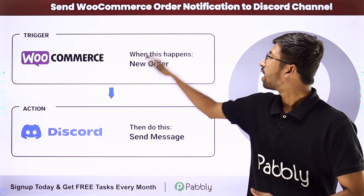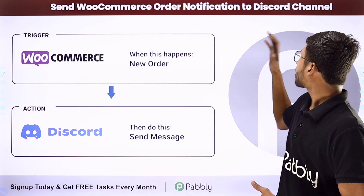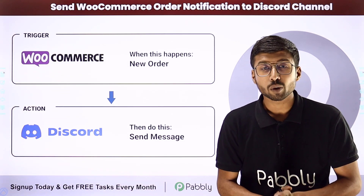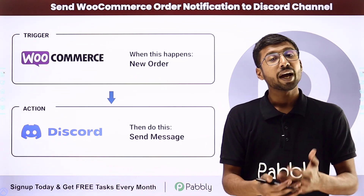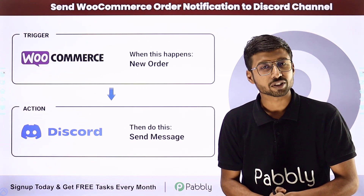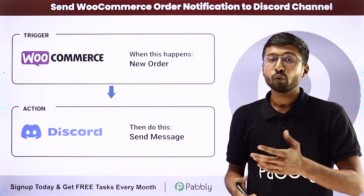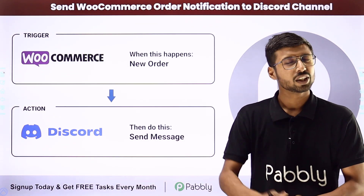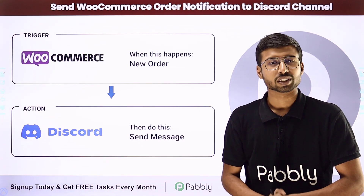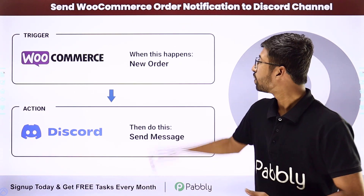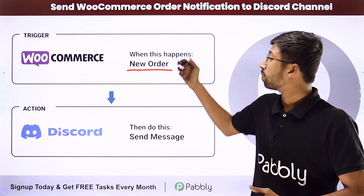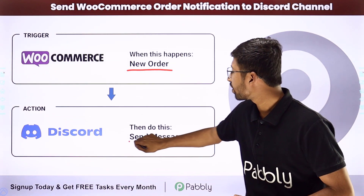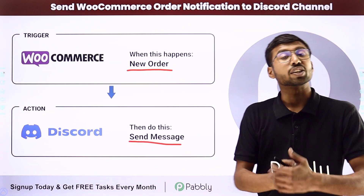In this video we are going to learn how to send WooCommerce order notifications to a Discord channel. If you have created an e-commerce store using WooCommerce and you want to notify your team members on Discord about new orders and their details, you can completely automate this process. The trigger of this automation will be getting a new order on your WooCommerce store, and the action will be sending those order details as a channel message on Discord.